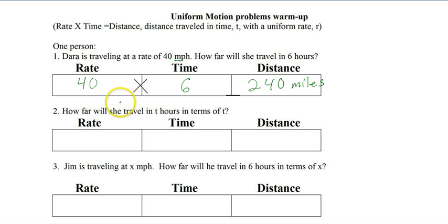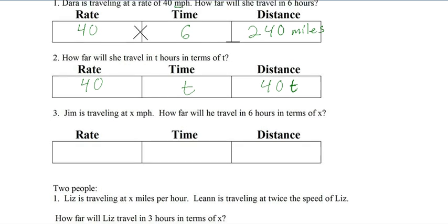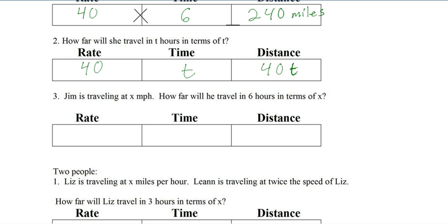How far will she travel in t hours? At the same speed, for t hours, that gives us 40t. This is what our problems are going to look like because we're going to be looking for either the rate or the time. So like this one: Jim has been traveling at x miles per hour. How far will he travel in 6 hours in terms of x? That's 6x.